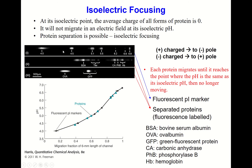The protein mixture moves along the plate from left to right. Each position on the plate has a different pH. Since protons are charged they migrate under the applied electric field — all protons are moving toward one side of the plate.